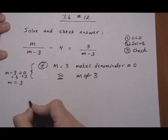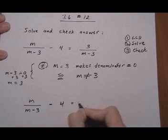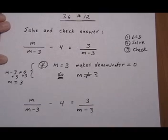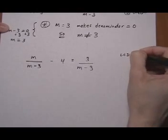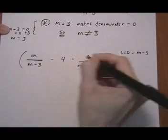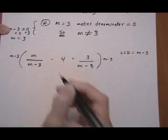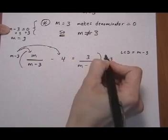So let's go ahead with our normal steps now. So I'm going to rewrite the equation. And I'm going to find my LCD. LCD equals m minus 3. Multiply both sides by m minus 3.